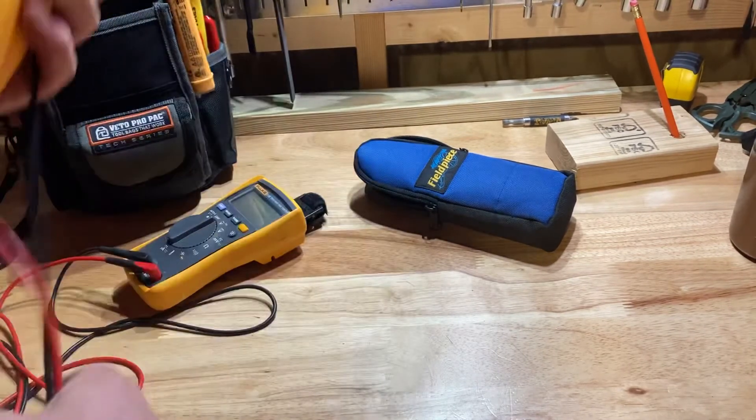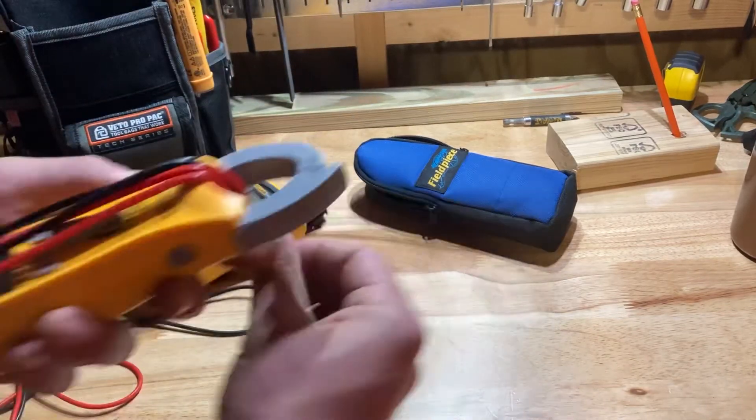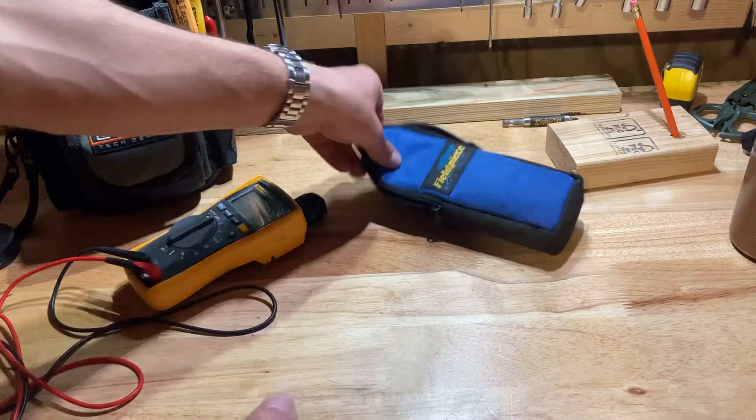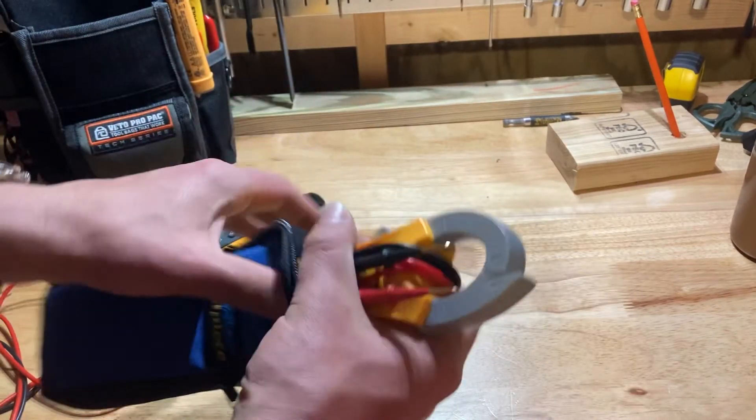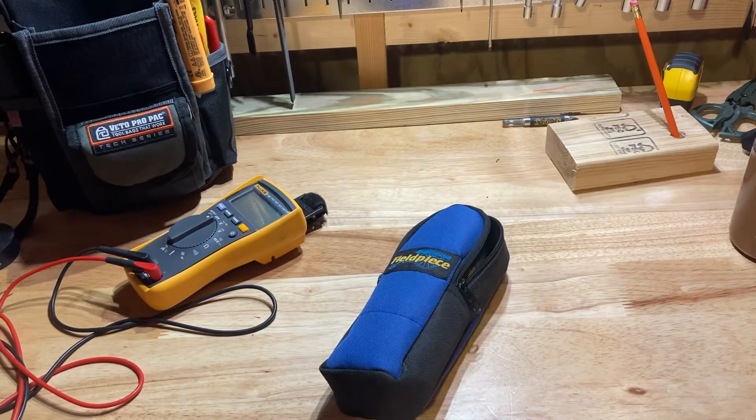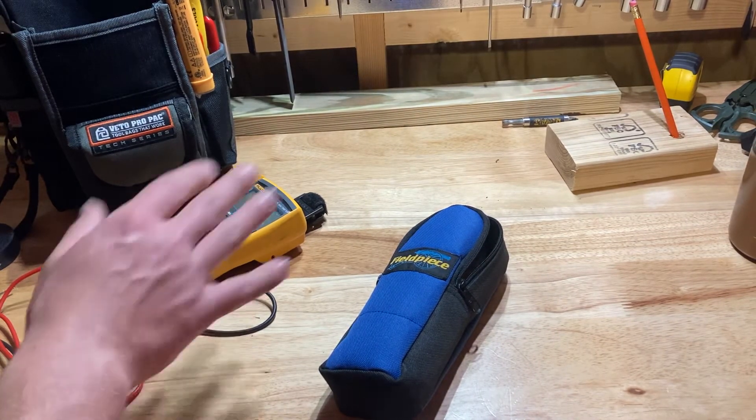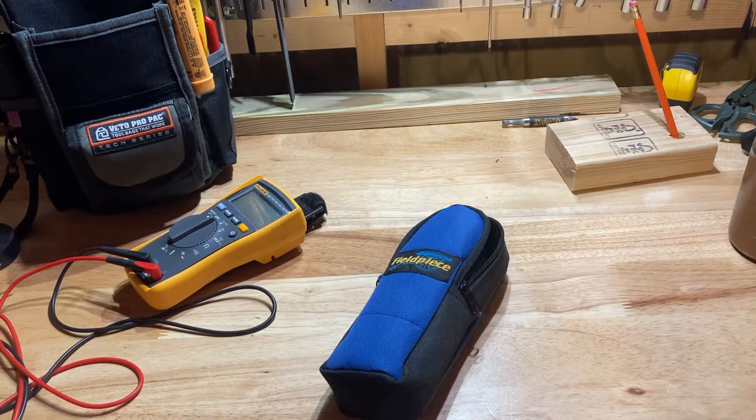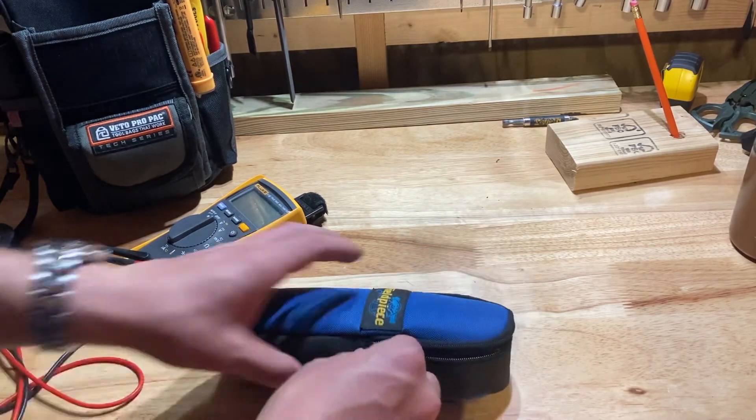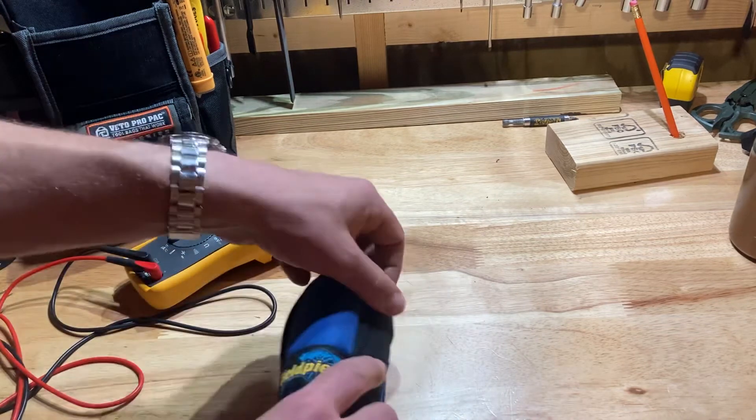It's still good. I keep it in the house. It's good for just quick checks, stuff in the house if I'm working on something. And it's a good backup to have. You always gotta have a backup meter. I've had Klein meters. I've always either had Fluke, Fieldpiece, or Klein. The Klein ones are cheap and they're not that great. They're not up to the Klein standard, in my opinion.